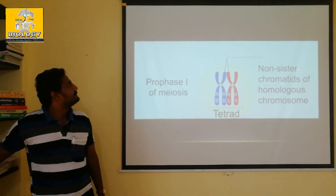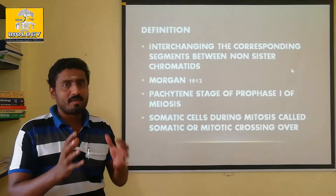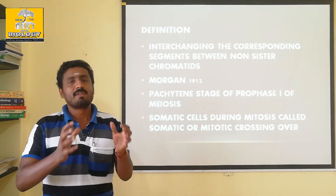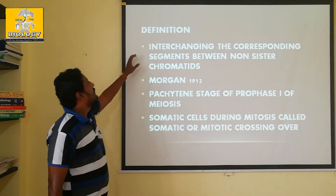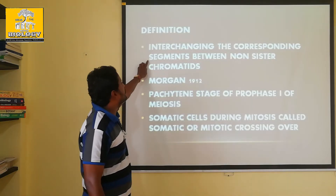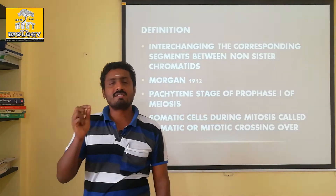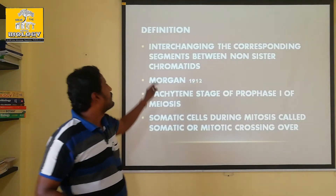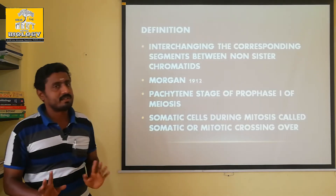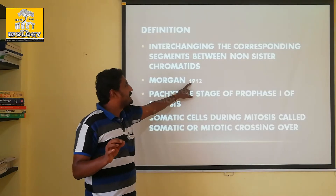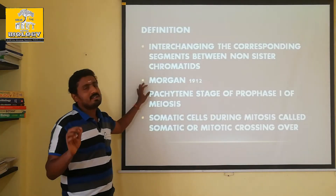First we will talk about the definition of crossing over: the interchange in between the non-sister chromatids — one single interchange of non-sister chromatids. That is the process called crossing over. This was discovered by T.H. Morgan in 1912 using Drosophila melanogaster.